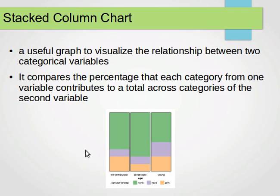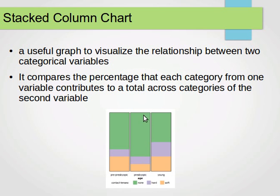So we're dealing with percentages. The data shown here is about the age of people and their use of contact lenses. We have 'young' and you can see the percentage using soft contact lenses, hard contact lenses, and none. Then for 'presbyopic,' we have that percentage using soft contacts, that percentage using hard contacts, and that percentage not using contacts at all. These are all percentages as explained.